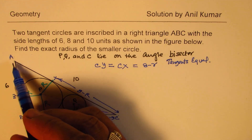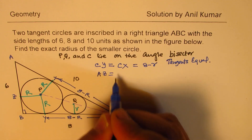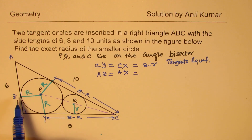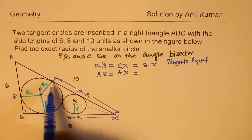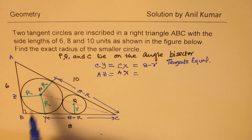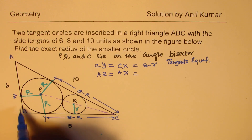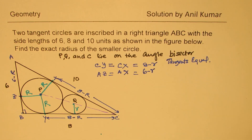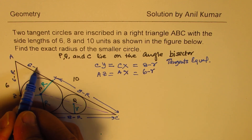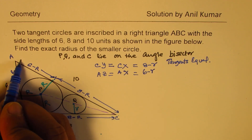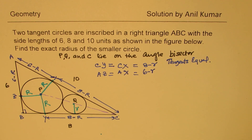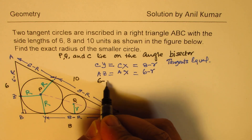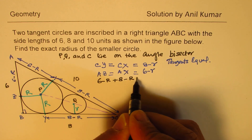On the other hand, A to Z should equal A to X, for the same reason — from point A these are the two tangents to the circle. Since the radius there is R, that distance is 6 minus R. We can now clearly see that their sum should be 10, so 6 minus R plus 8 minus R equals 10.